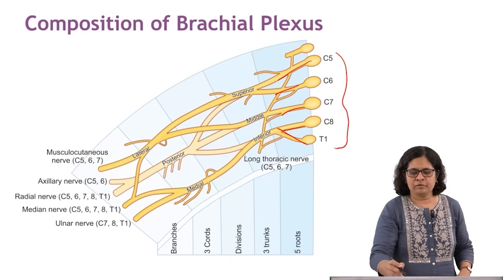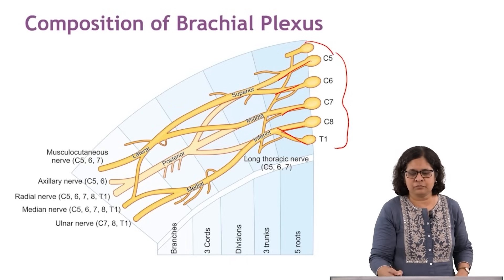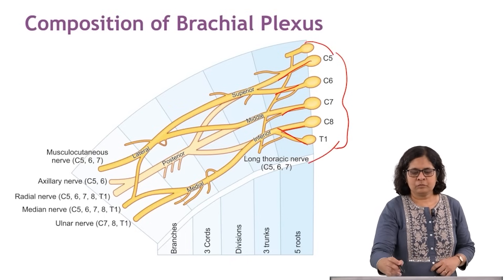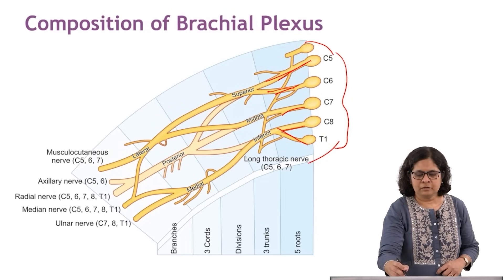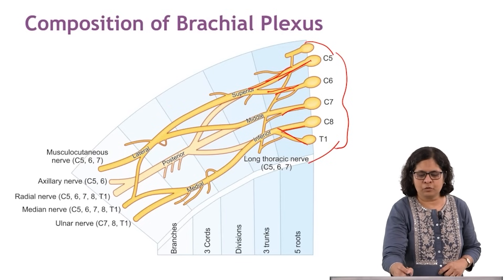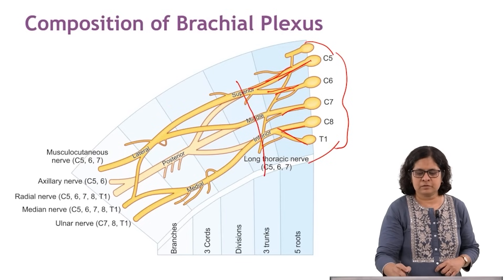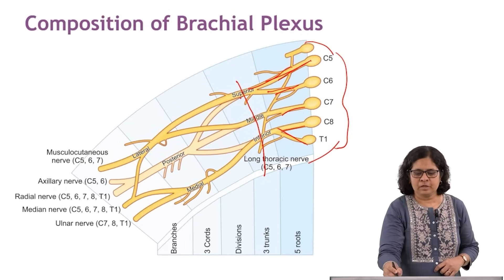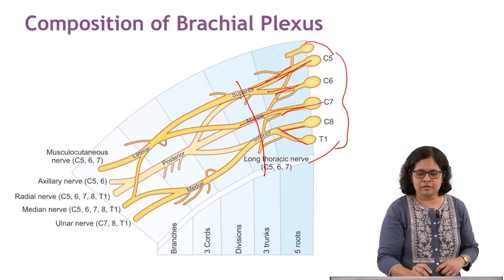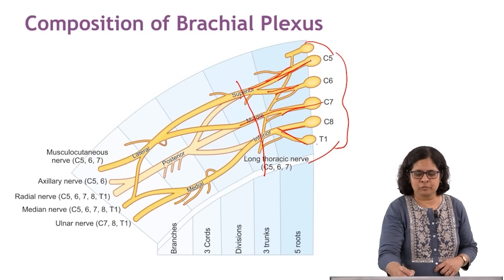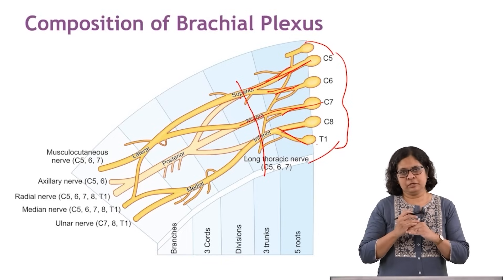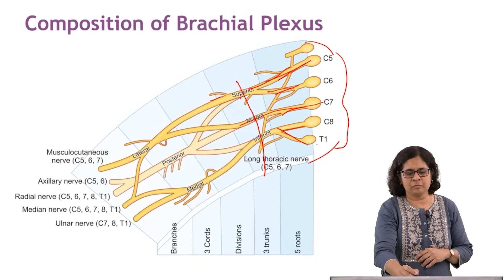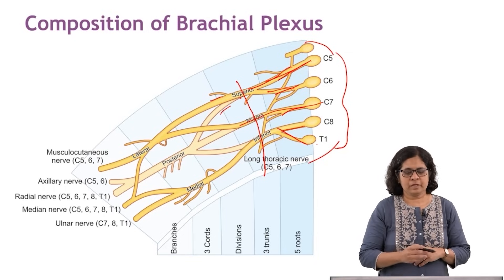These roots come out from the spinal foramina and unite to form three trunks. The ventral rami of C5 and C6 form the superior trunk, C7 continues as the middle trunk, and C8 and T1 unite to form the inferior trunk. Immediately after forming, each trunk divides into anterior and posterior branches.